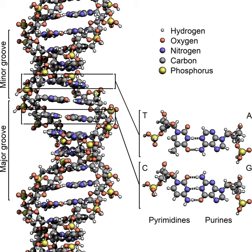Bioinformatics involves the manipulation, searching, and data mining of DNA sequence data. The development of techniques to store and search DNA sequences have led to widely applied advances in computer science, especially string searching algorithms, machine learning, and database theory. String searching or matching algorithms, which find an occurrence of a sequence of letters inside a larger sequence of letters, were developed to search for specific sequences of nucleotides. In other applications, such as text editors, even simple algorithms for this problem usually suffice, but DNA sequences cause these algorithms to exhibit near-worst-case behaviour due to their small number of distinct characters.